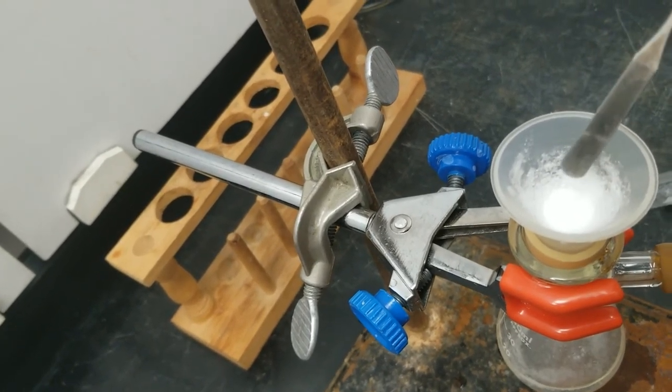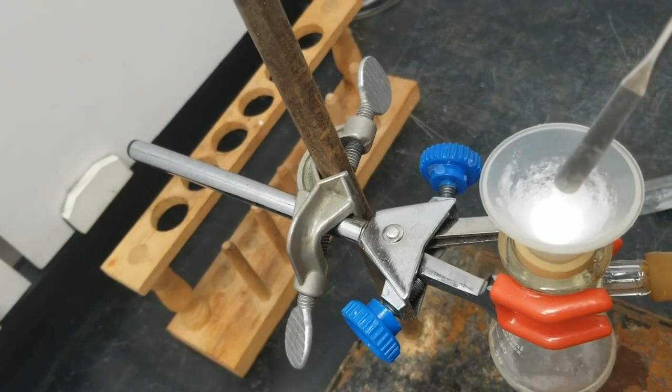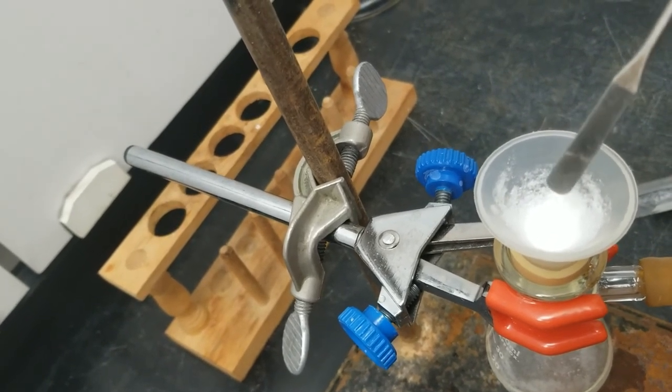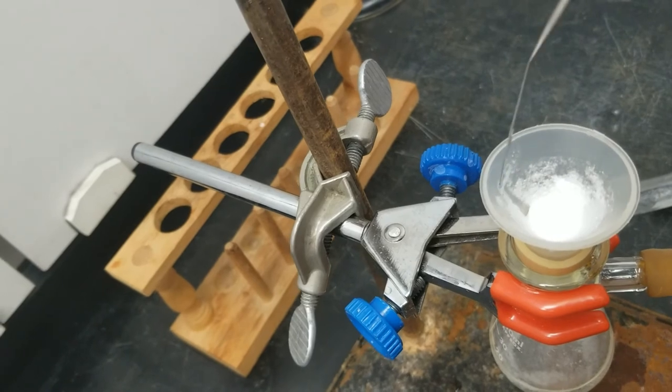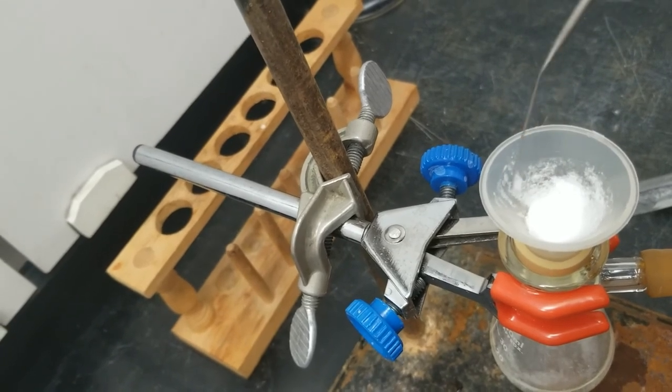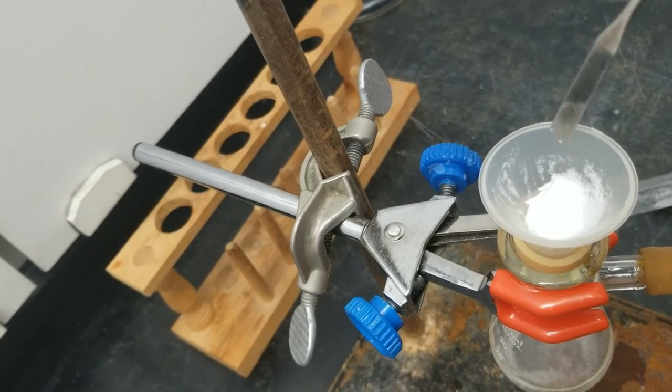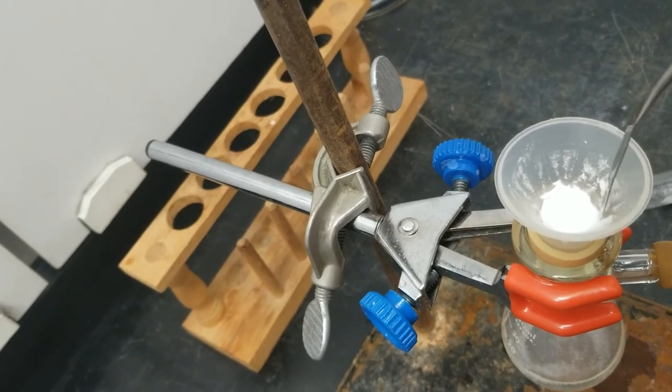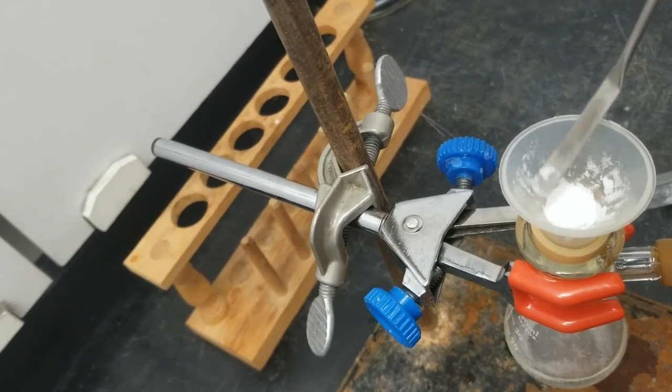So the air is being sucked through the filter paper, which is down here at the bottom of this cone in the Hirsch funnel. So I want the air to be passing over the product in order to dry it. So I'm going to get it down off the sides and get it down against that filter paper.